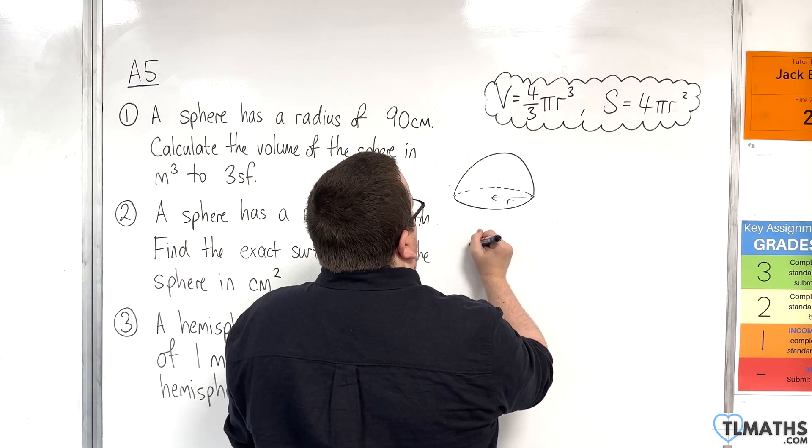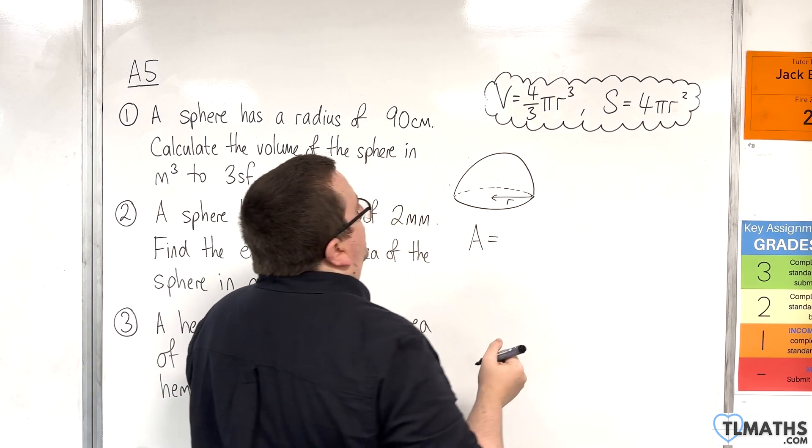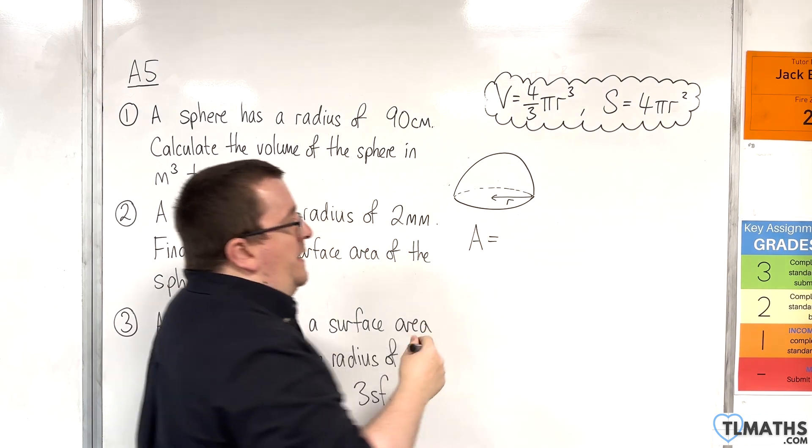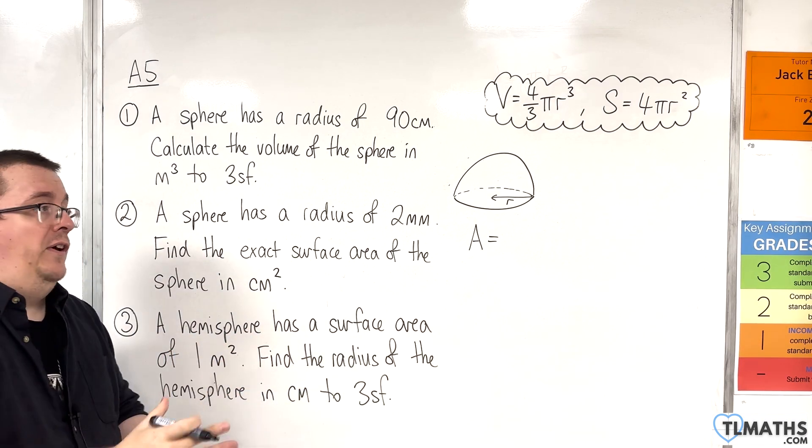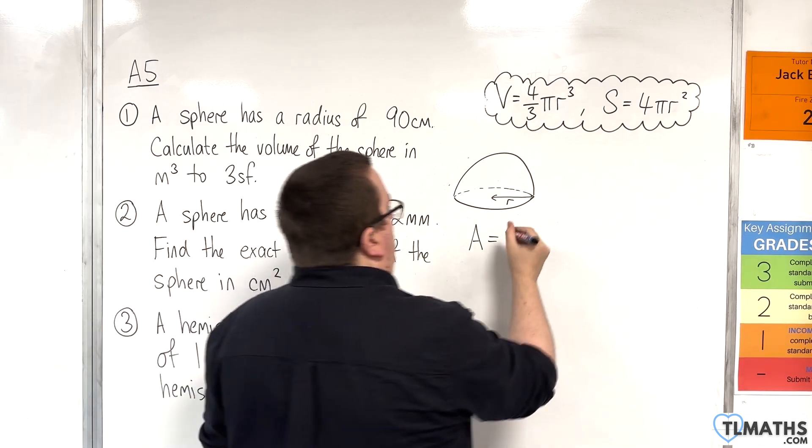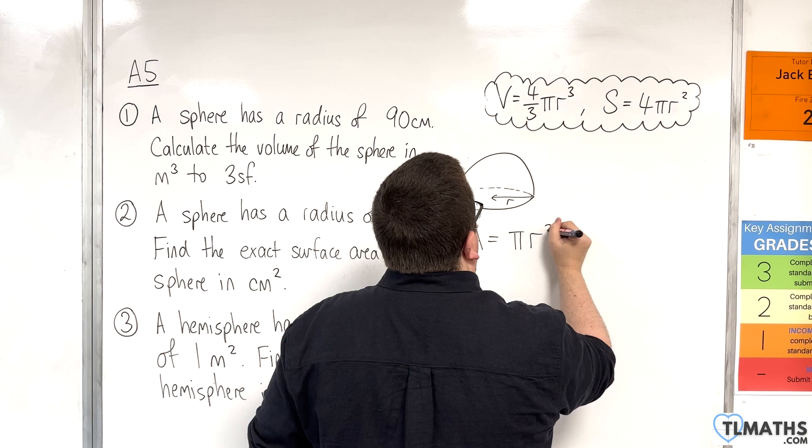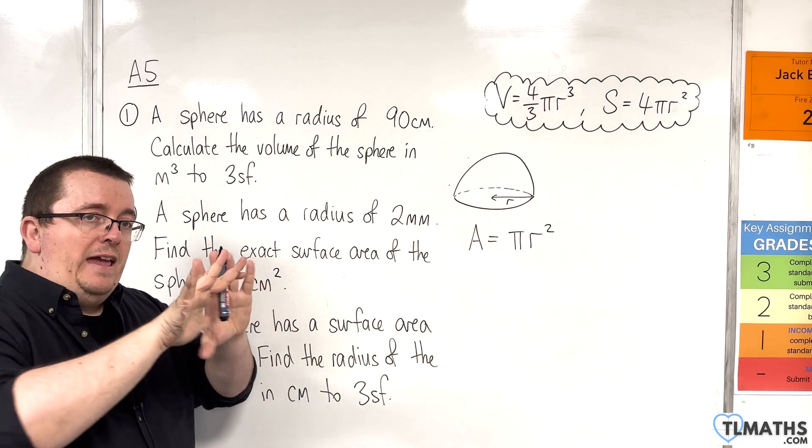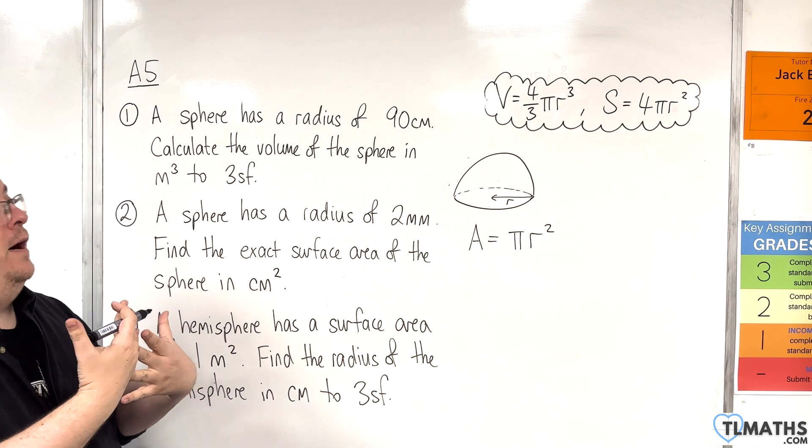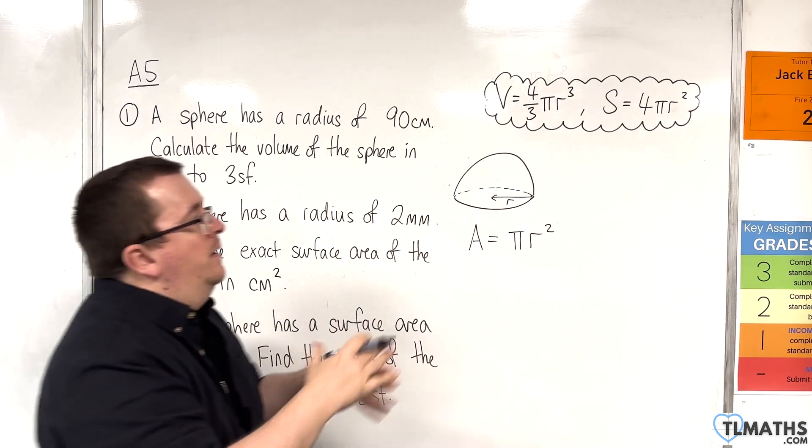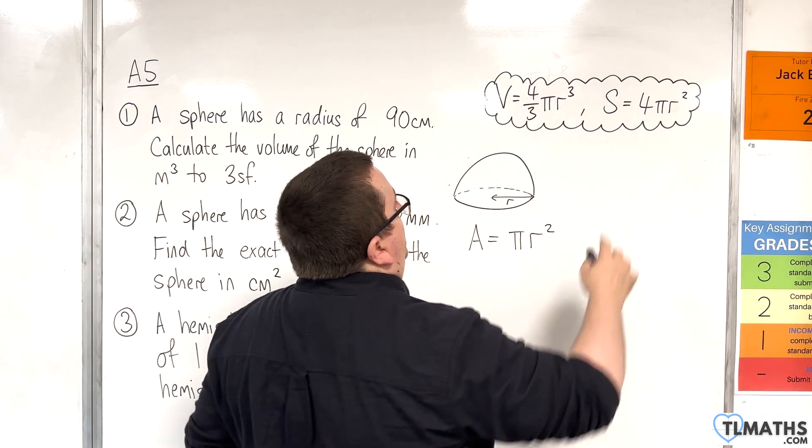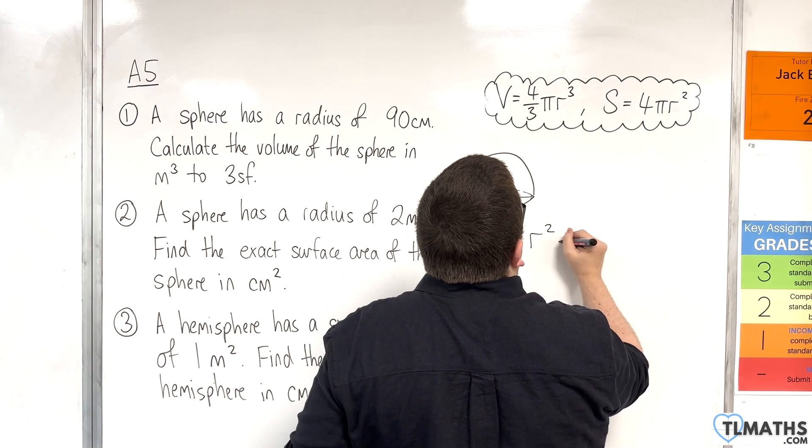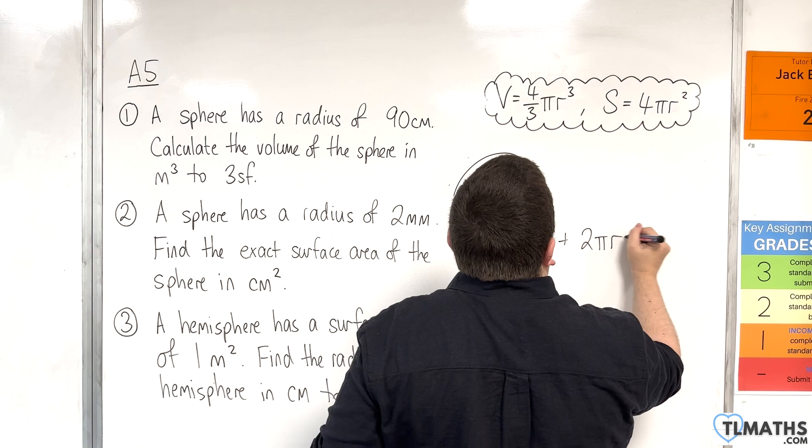So the total area is going to be, now we've got the base of the hemisphere, which is a circle, which is pi r squared. And then we've got the surface area of half a sphere, so that's half of 4 pi r squared. So that would be 2 pi r squared.